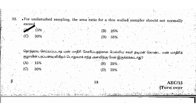In this video, the TNPIC-AE 2015 question paper is discussed, already covering 31 questions. For undisturbed sampling, the area ratio for a thin-walled sampler should not normally exceed. The right answer option is 15%.